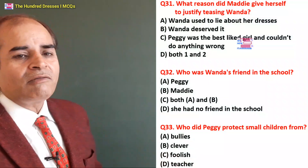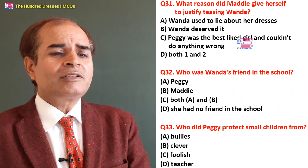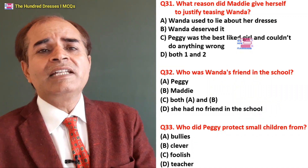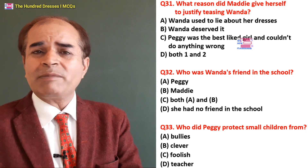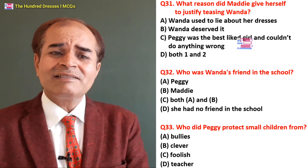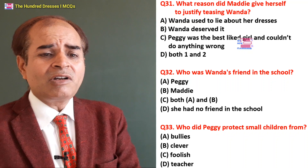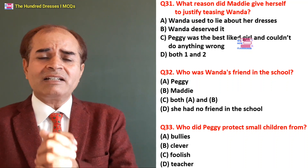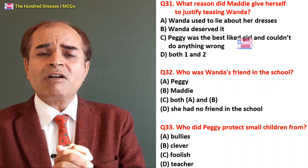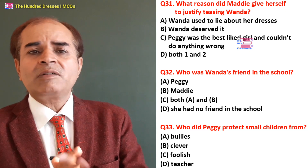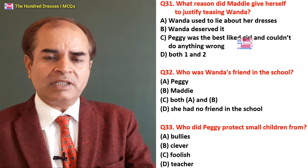Thirty-first question: What reason did Maddy give herself to justify teasing Wenda? If Wenda used to lie about her dresses? Wenda deserved it — no. Peggy was the best-liked girl and could not do anything wrong with anyone — yes. C is the right answer.